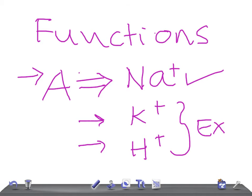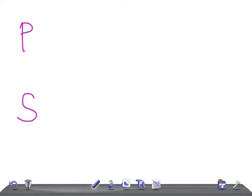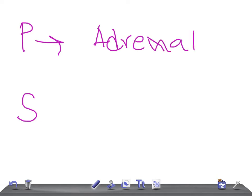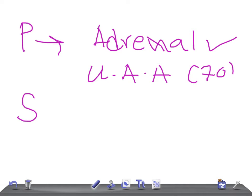Now, in primary hyperaldosteronism, the cause is within the adrenals themselves — the adrenals are causing increased secretion of aldosterone. The most common cause for primary aldosteronism is a unilateral adrenal adenoma, occurring in about 70% of cases.